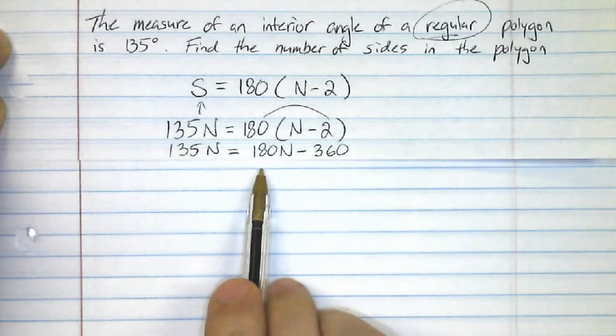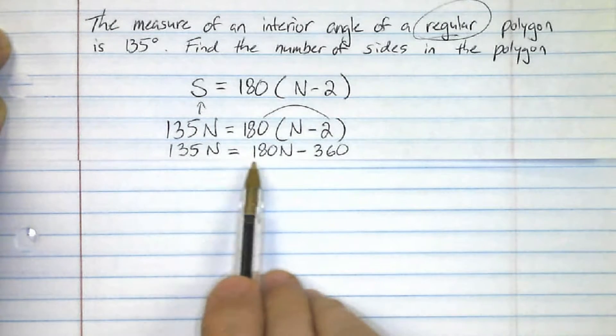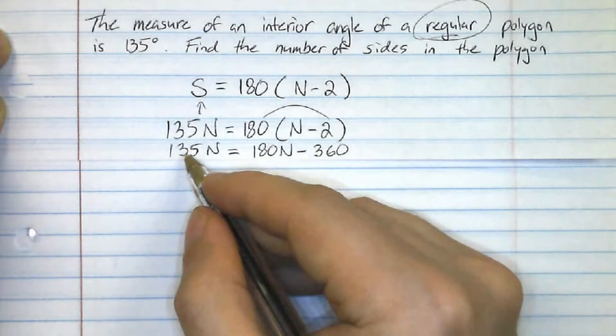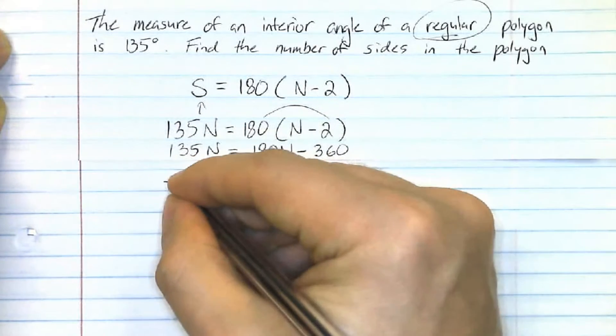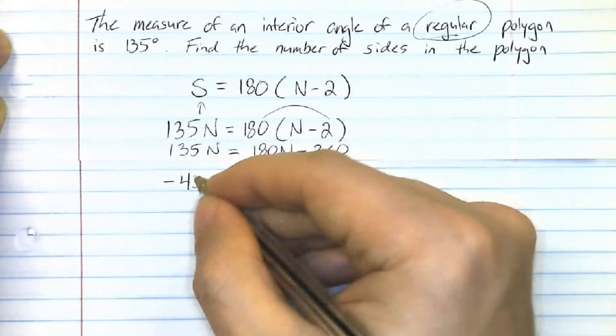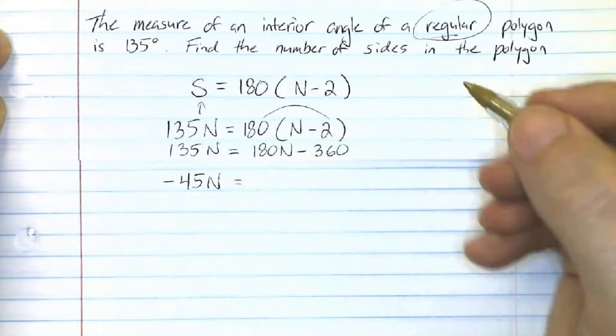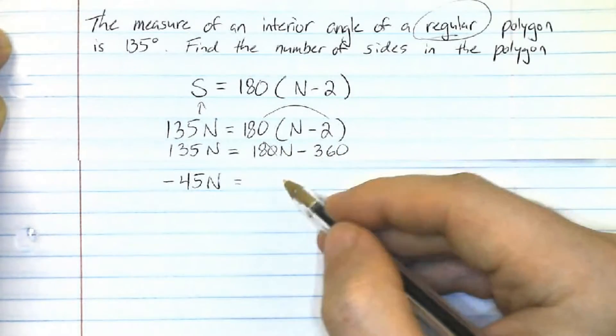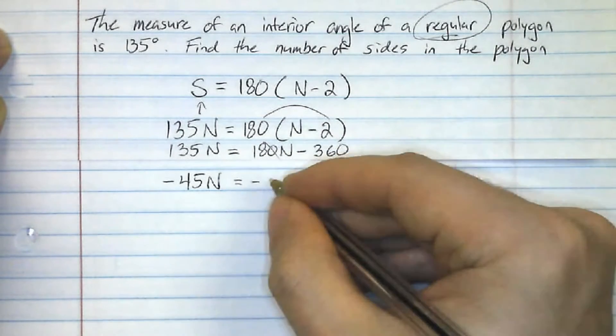Now, I'm going to take away 180Ns from both sides here. When I do this, 135 minus 180, that's going to be negative 45Ns. This is gone, 180 minus 180, zero. And I have the minus 360.